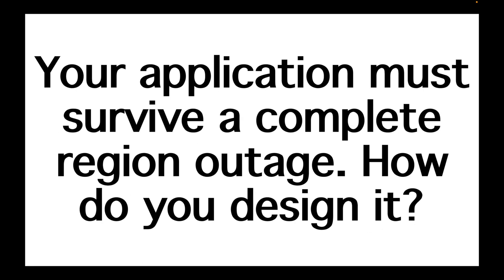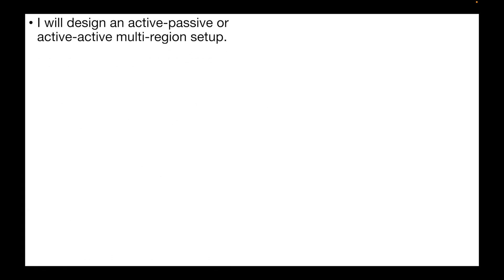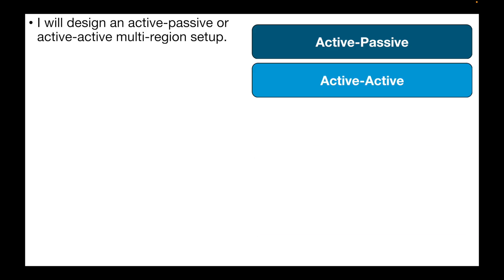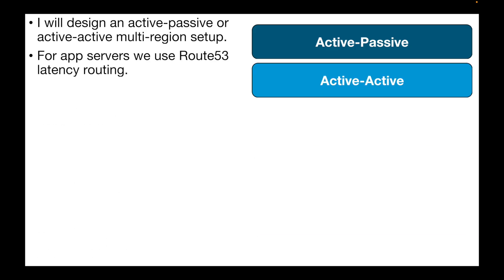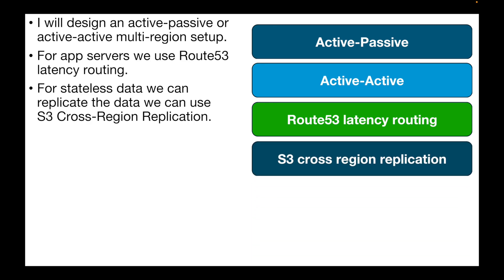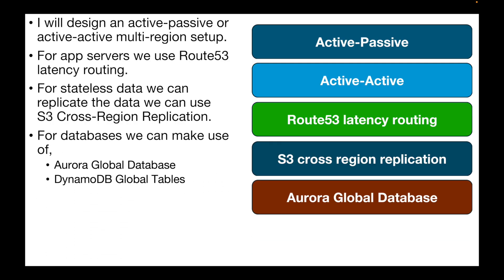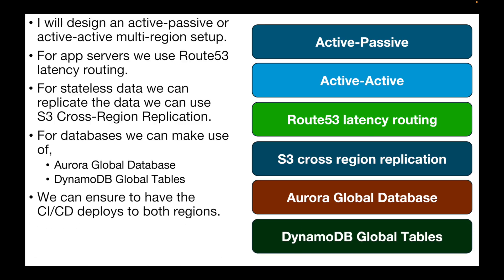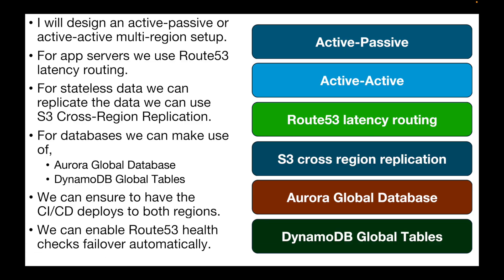The final question is: your application must survive a complete region outage. How do you design this? Design an active-passive or active multi-region setup. For app servers, use Route 53 latency routing. For stateless data, replicate using S3 Cross-Region Replication. For databases, use Aurora Global Database or DynamoDB Global Tables. Ensure your infrastructure is deployed in both regions using infrastructure-as-code, and enable Route 53 health checks with failover to automatically switch regions if one goes down.